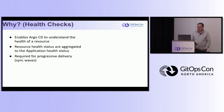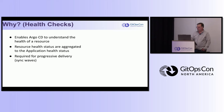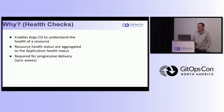Health checks allow Argo to understand the health of a resource. This is really critical when you're deploying custom resource definitions, operators, and things that Kubernetes has no understanding about. Another common question on the CNCF Argo CD Slack is: 'I'm doing a SyncWave and it's not working, it's just skipping the resource.' Nine times out of ten it's because it's a custom resource with no health check. Argo knows nothing about it, deploys it, and considers it healthy. You need to write a health check for the SyncWave to actually work.